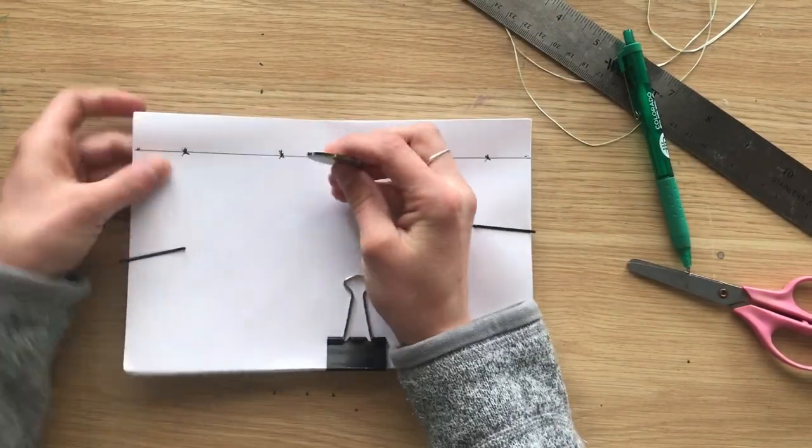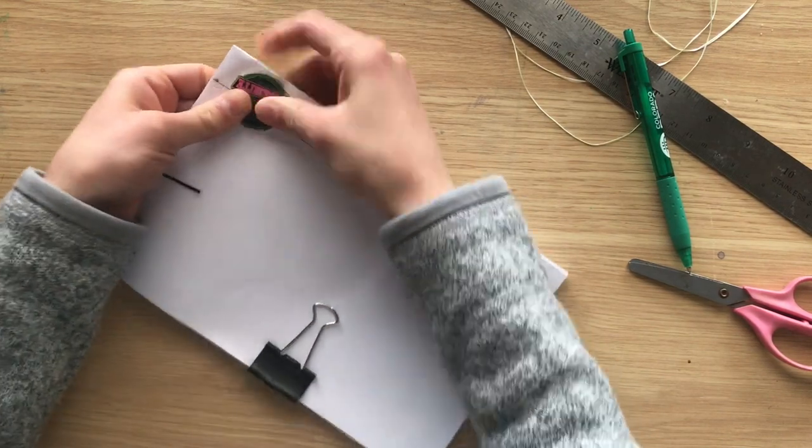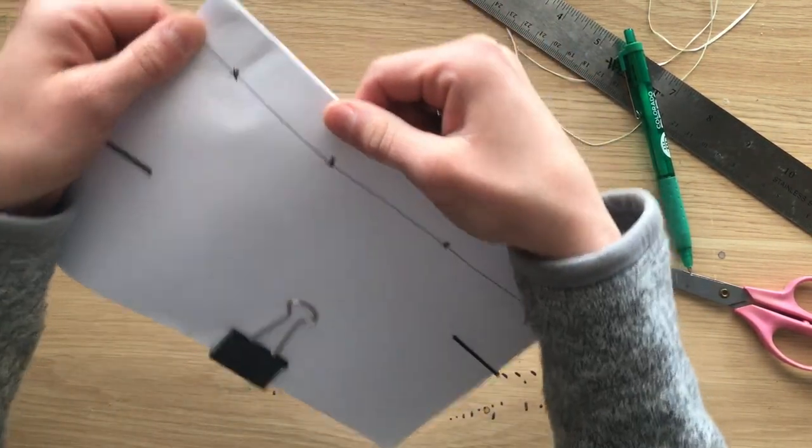Once you've marked where your holes are going to be, you're going to take your thumbtack or enamel pin, and you're going to punch a hole through every sheet of paper where that tick mark is.